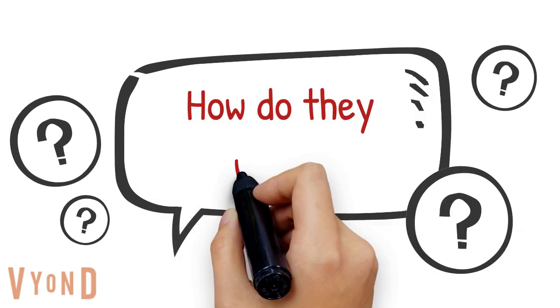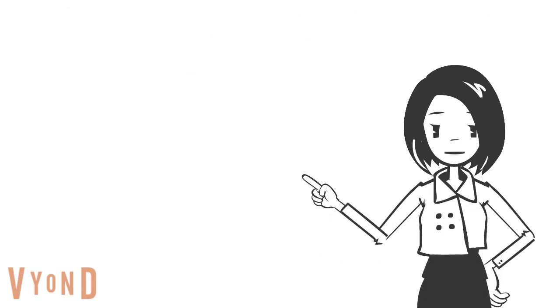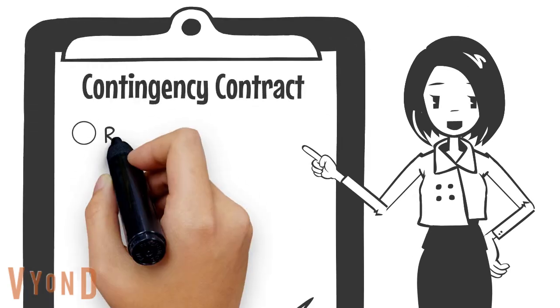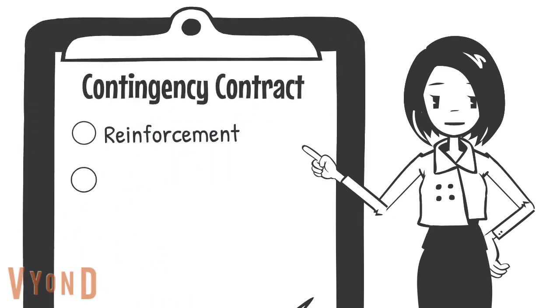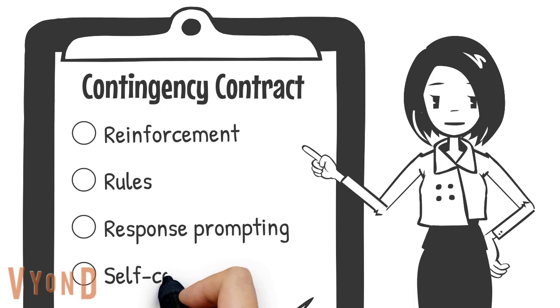How do contingency contracts work? Typically, a package involves reinforcement, rules, and response prompting. Contingency contracts can even be a self-contract.